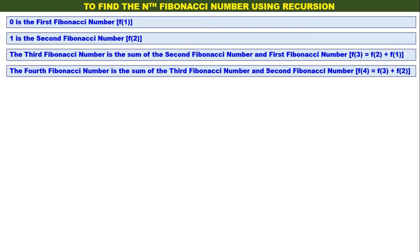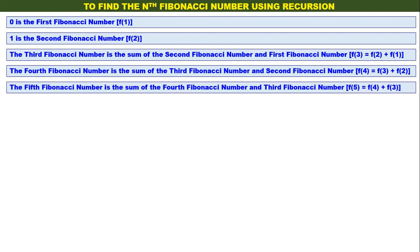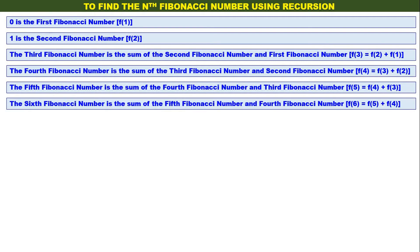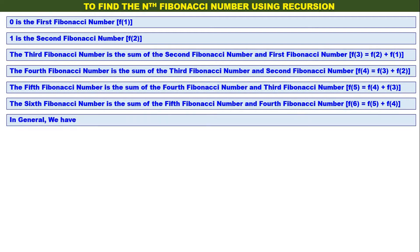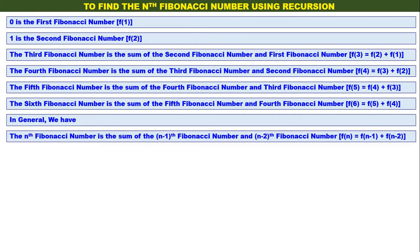The fourth Fibonacci number is the sum of the third and second, so f of 4 equals f of 3 plus f of 2. The fifth Fibonacci number: f of 5 equals f of 4 plus f of 3. The sixth: f of 6 equals f of 5 plus f of 4. In general, the nth Fibonacci number is f of n equals f of n minus 1 plus f of n minus 2.